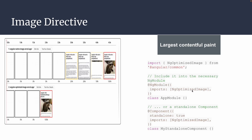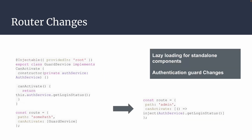For the image directive, we can use ng-optimized-image, which is a standalone component created by the Angular team. It can be used by importing in your ng module or at a standalone component level. The ng-optimized-image decreases load time and loads the Largest Contentful Paint (LCP) as soon as possible. Whatever is visible on the UI is considered LCP. They tested on different Angular applications and found a 75% decrease in LCP load time, helping users load applications very fast.